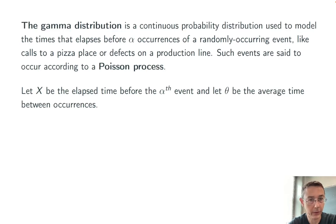So let's get some technical stuff here. Let X be the random variable in question, the elapsed time before the alpha-th event, and let theta be the average time between occurrences.